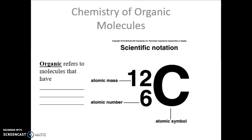The main thing I want you to think about with this chapter — chemistry of organic molecules — is food. We're going to talk about the major biomolecules: carbohydrates, fats, proteins, and nucleic acids. That's the goal: to look at this chapter and this topic in regards to food and things we eat.